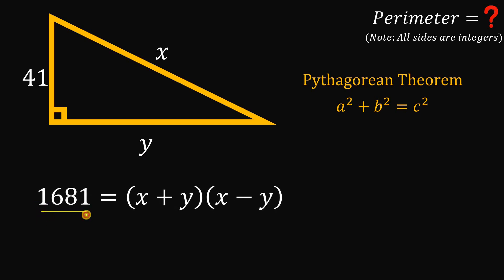The next question is what are the factors of 1681? There are two factors: we have 1681 times 1, or 41 times 41. Take note that we want positive factors because x and y are both positive integers. Also note that x + y must be greater than x - y since x and y are both positive integers.